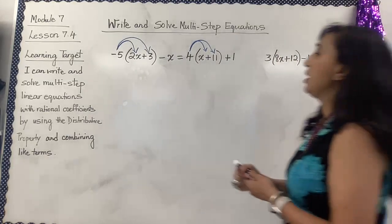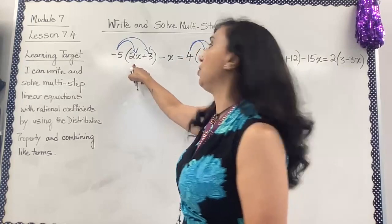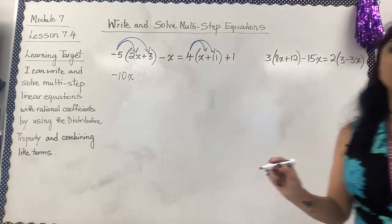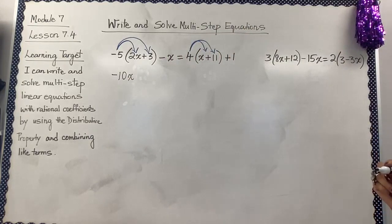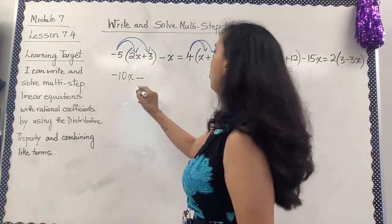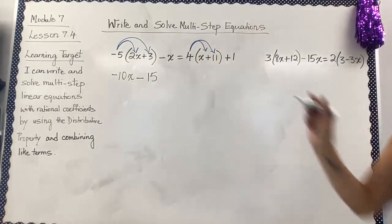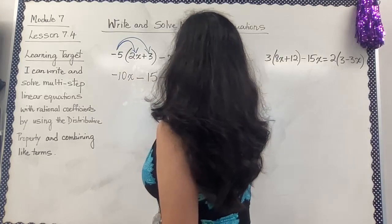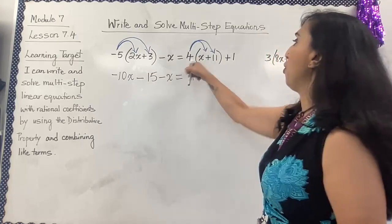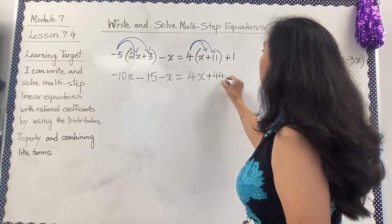Negative times positive gives a negative product, so negative 5 times 2 is negative 10x. Then negative 5 times positive 3 — opposite signs — gives minus 15. And then I have minus x. This equals 4 times x which is 4x, plus 4 times 11 — all positives — giving a positive product of 44 plus 1.